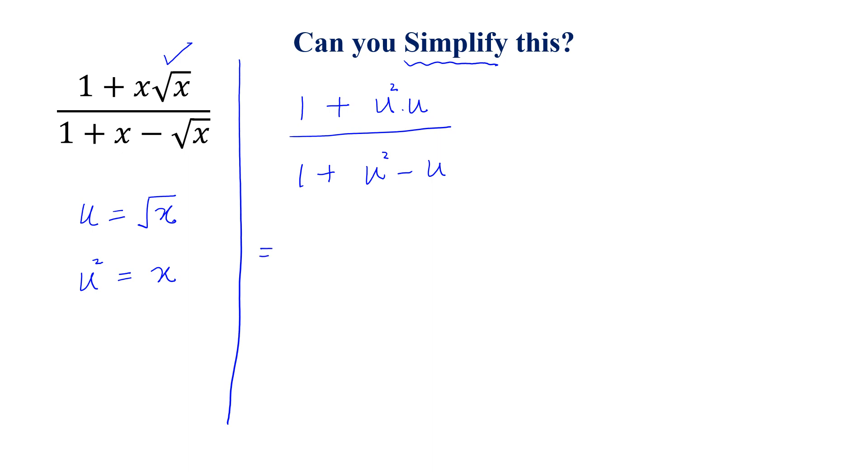Now, this is equal to 1 plus u cube, divided by 1 plus u square minus u. We know that a cube plus b cube is equal to a plus b times a square minus ab plus b square. Using this formula,